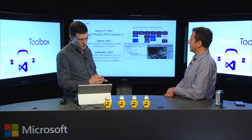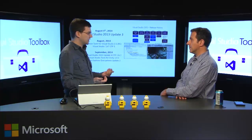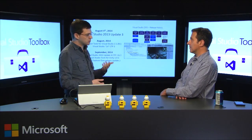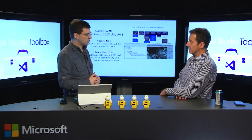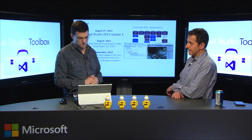When we got to September, we got into the first CTP of Update 4. This update that went RTM today was already in its first CTP, then the second CTP. That same month, we released an update to Visual Studio Tools for Unity - it's free for customers of Visual Studio. We also had Team Explorer Everywhere, an Eclipse plugin that makes it easy to work with Visual Studio Online or Team Foundation Server, great for Java developers.